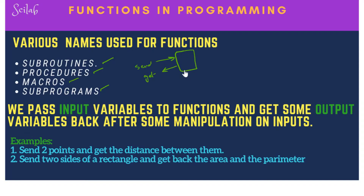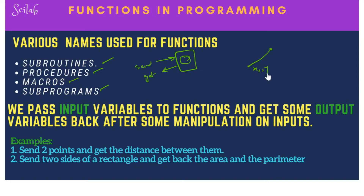Functions are a piece of code where we send certain variables, manipulate those variables, and get back whatever we want. For example, we can send the coordinates of two points — x1, y1 and x2, y2 — to a function, and get back the distance between these two points.